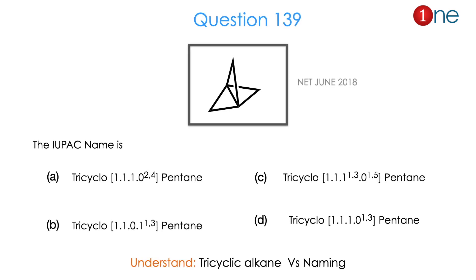Then let us see the next question. You have a tricyclic compound and they are asking for the IUPAC name — whether it is tricyclopentane with attachments 1,1,1 and 2,4; or 1,1,1 and 1,3,1,5; or 1,1,0 with 1,3 attachment; or 1,1,1 with 1,3 attachment. Basically it is a pentane with different attachments. The question is really about tricyclic alkane versus its IUPAC naming. The answer is D.